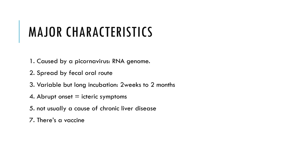Then we move to the icteric phase: dark urine, clay-colored stools, and overt jaundice with yellowing of the skin. The good news with HAV is that it's normally pretty self-limited — patients most of the time will recover. It rarely causes fatal disease in adults, has a slightly higher mortality in children, doesn't usually cause chronic liver disease, and we have a very effective vaccine for it.